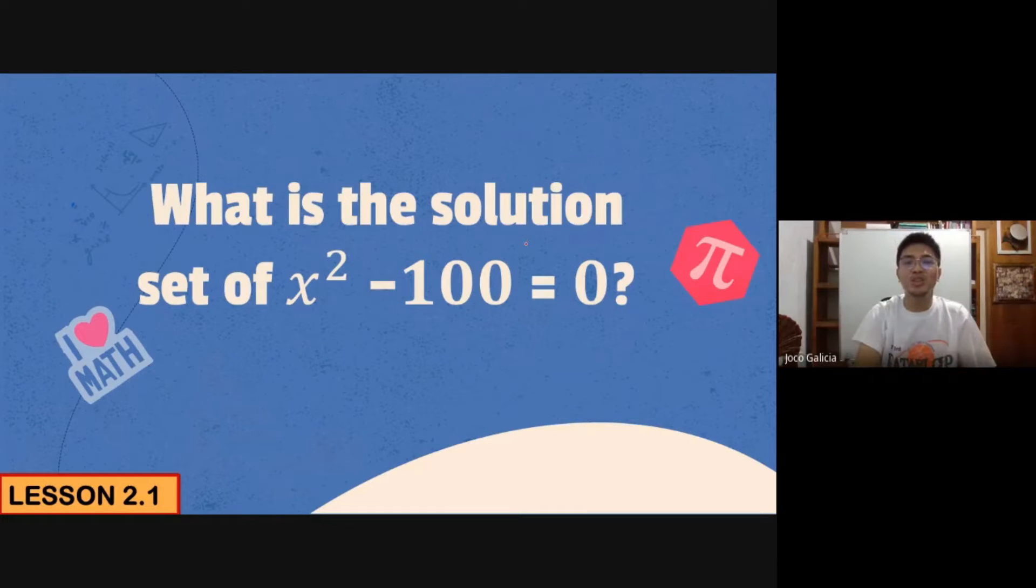Now, the first question is: what is the solution set of x² - 100 = 0? To answer this class, we have to write it in the form x² = k, where k is equal to the constant. So tandaan natin, the number is k.